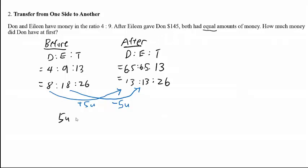So 5 units is equal to $145. To find 1 unit, you simply take $145 divided by 5, which gives $29.